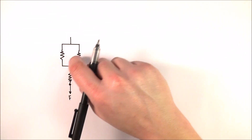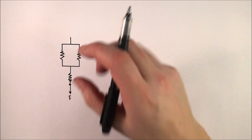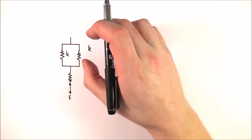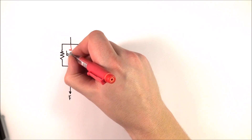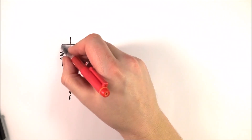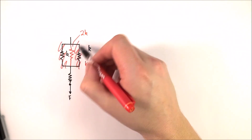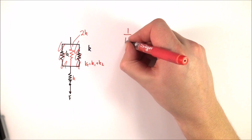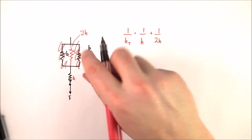As a final example: what if we had two springs in parallel and then one in series, all with spring constant little k? We can group the two parallel springs together. Using kt = k1 + k2, the combined spring constant of the two parallel springs is 2k. We now effectively have a 2k spring and a k spring in series. Using the series equation: 1 over the combined spring constant equals 1 over k plus 1 over 2k.